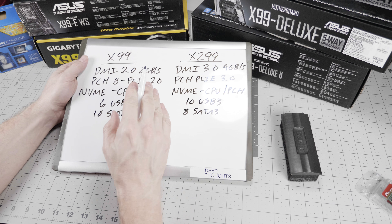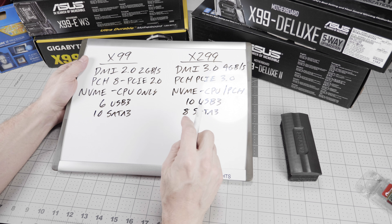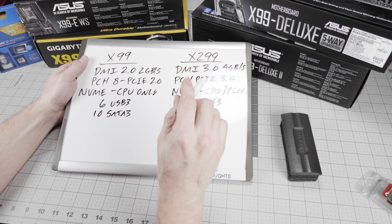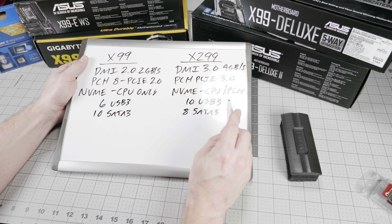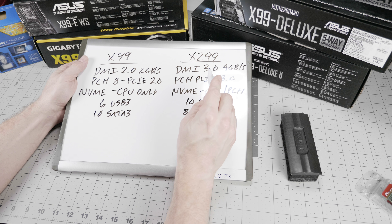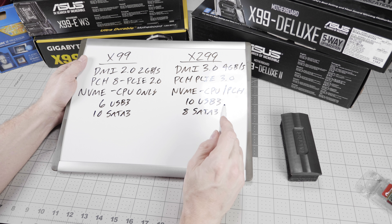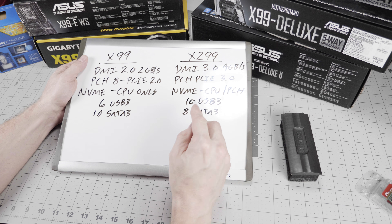Here's a really important point: if you look at these X299 features, this may look very familiar if you know the Z270 platform, because this is exactly the same PCH as the Z270. If you look at Intel's data sheets, they have simply added X299 applicability to this part. So this is the same platform controller hub you'll get on any Z270 motherboard today, with the same capabilities and features.